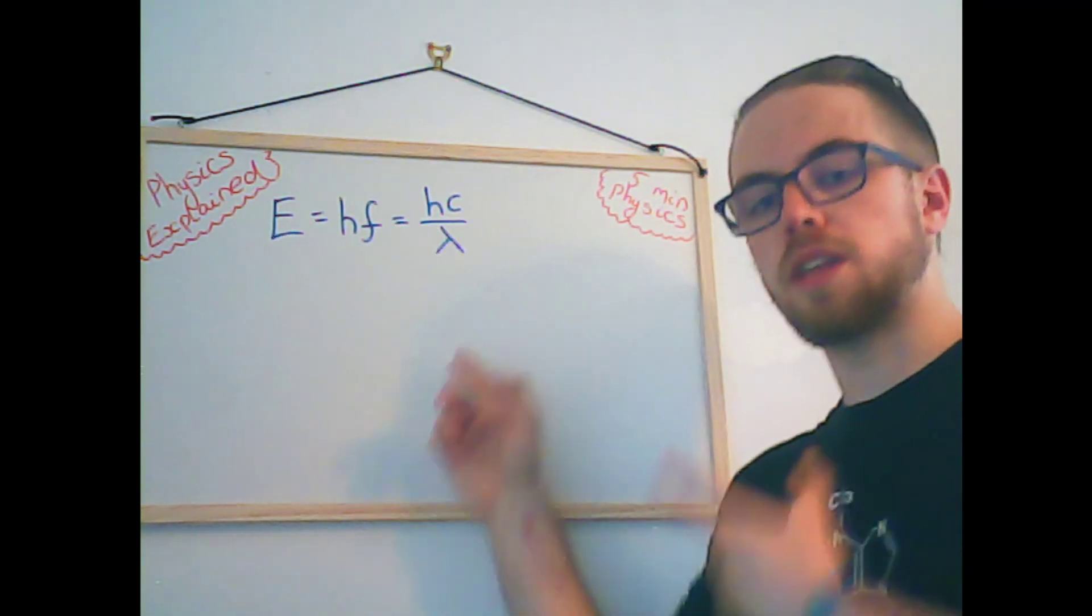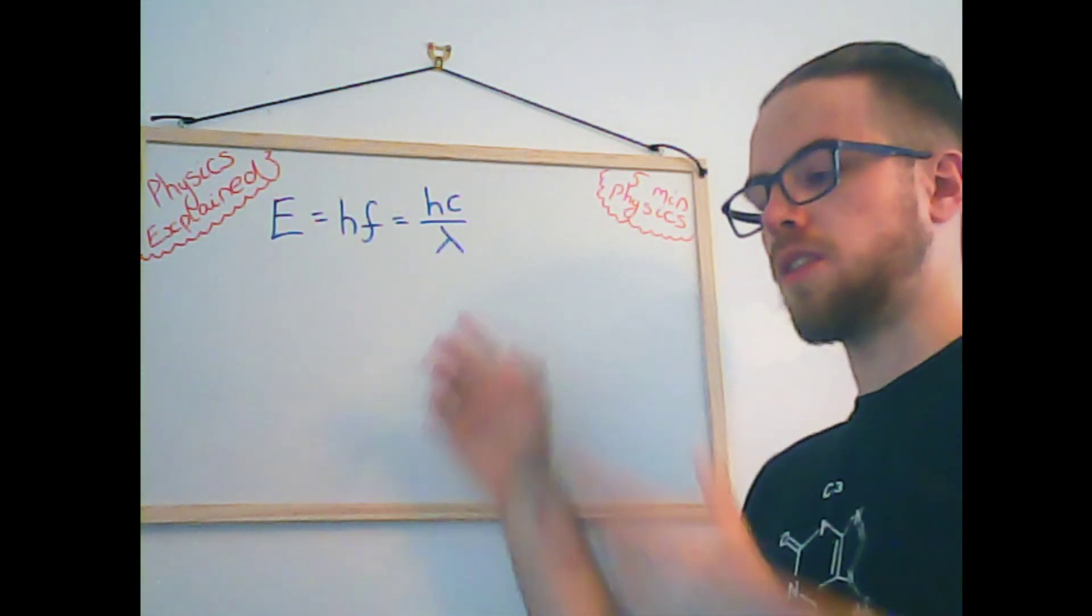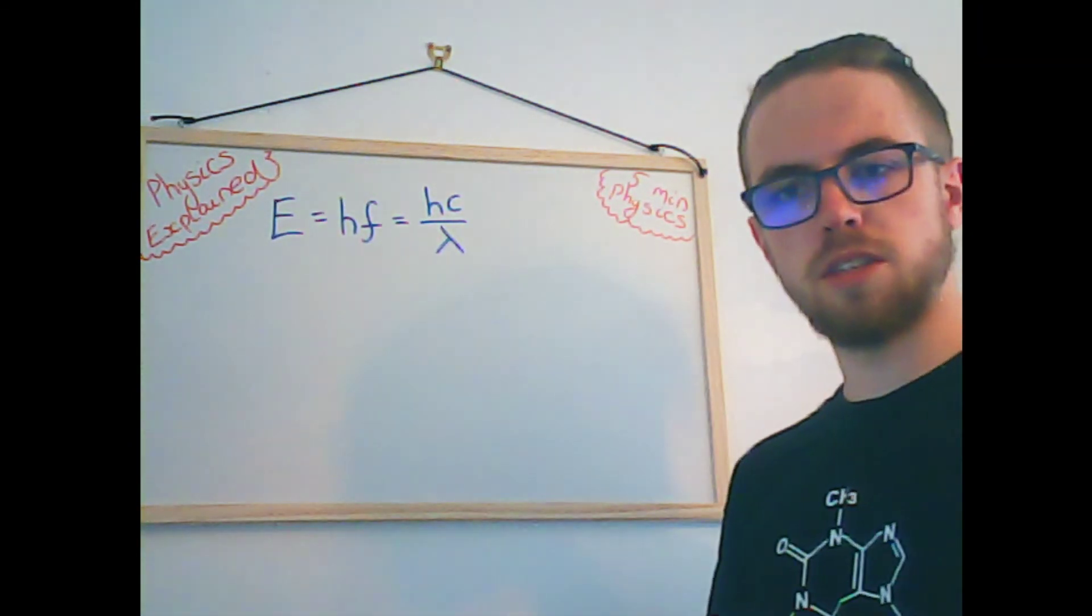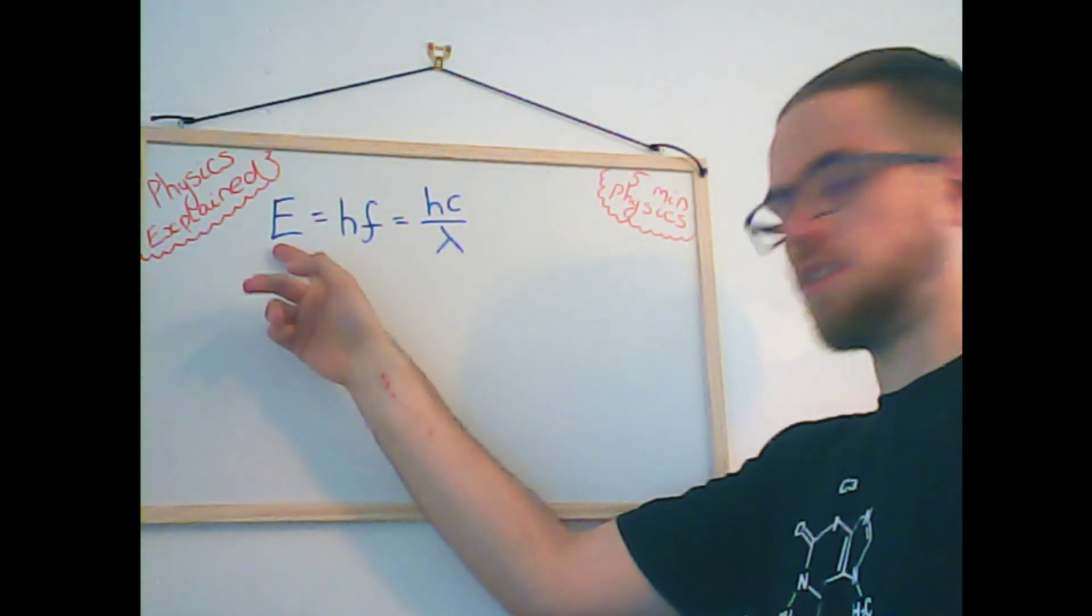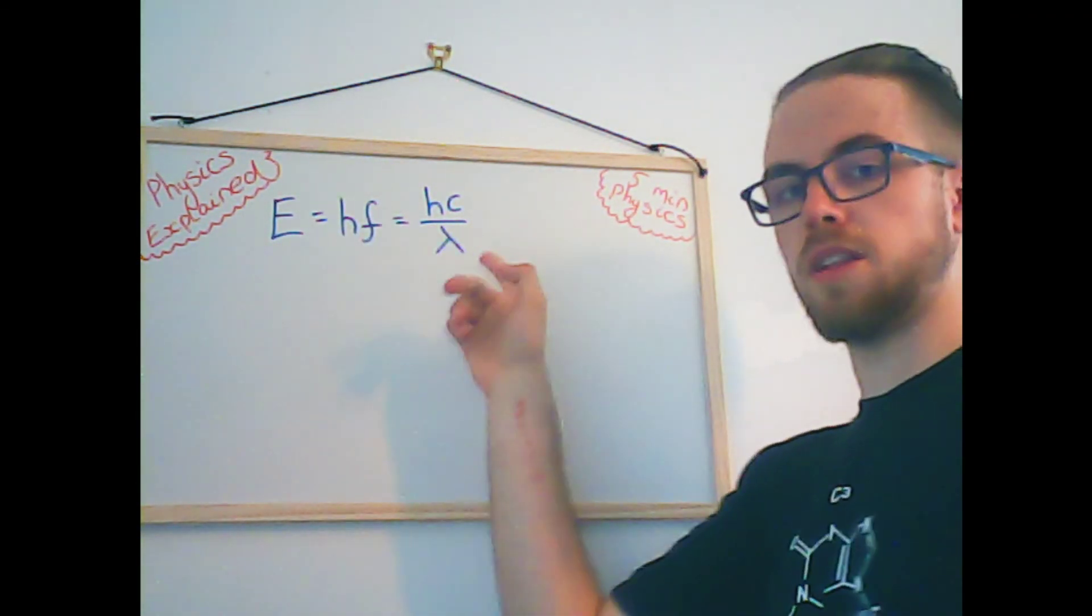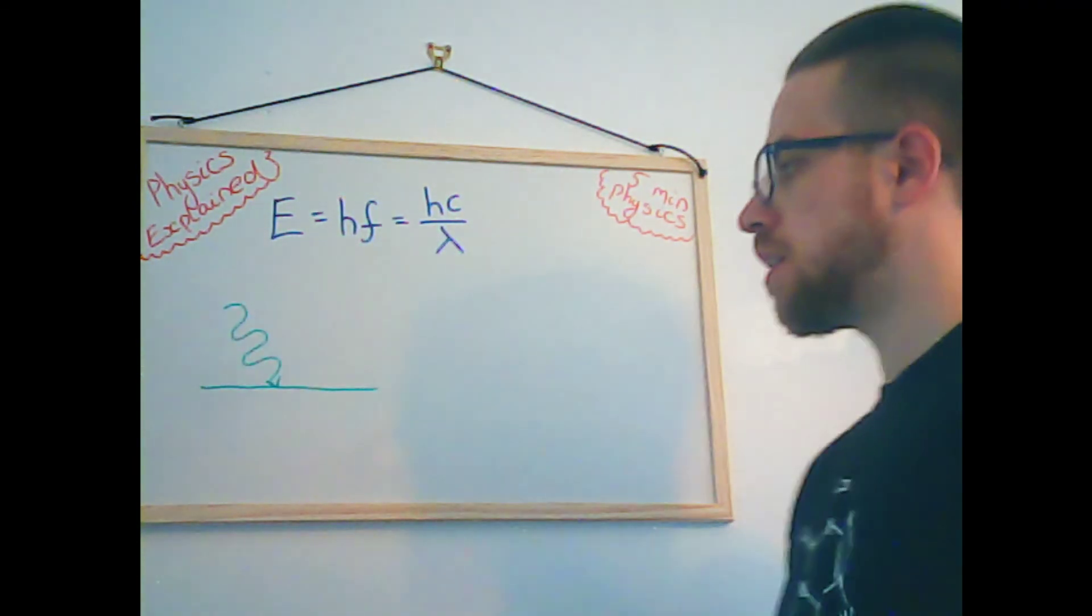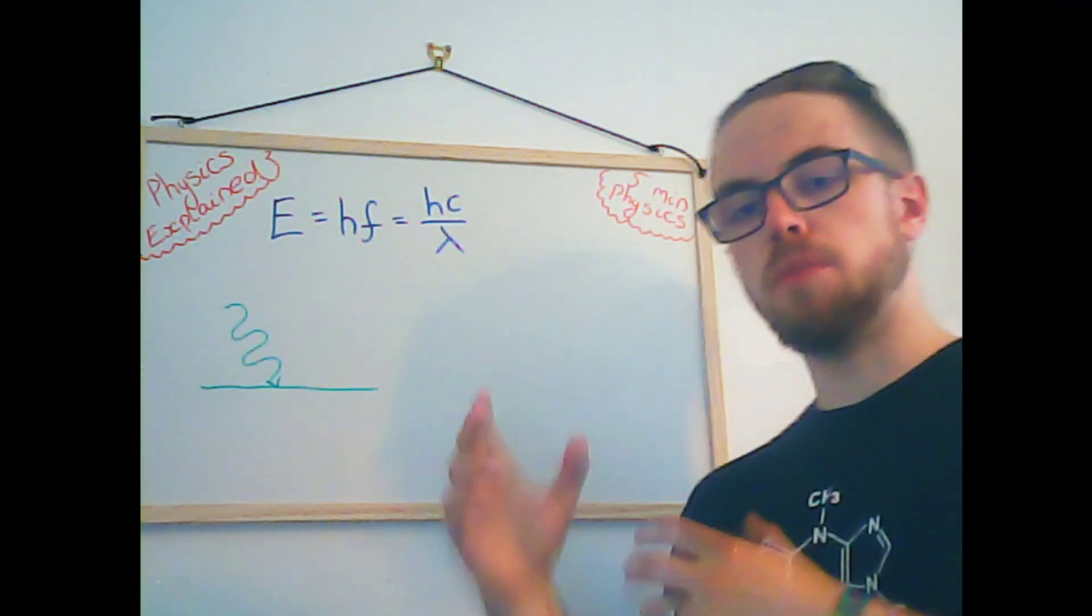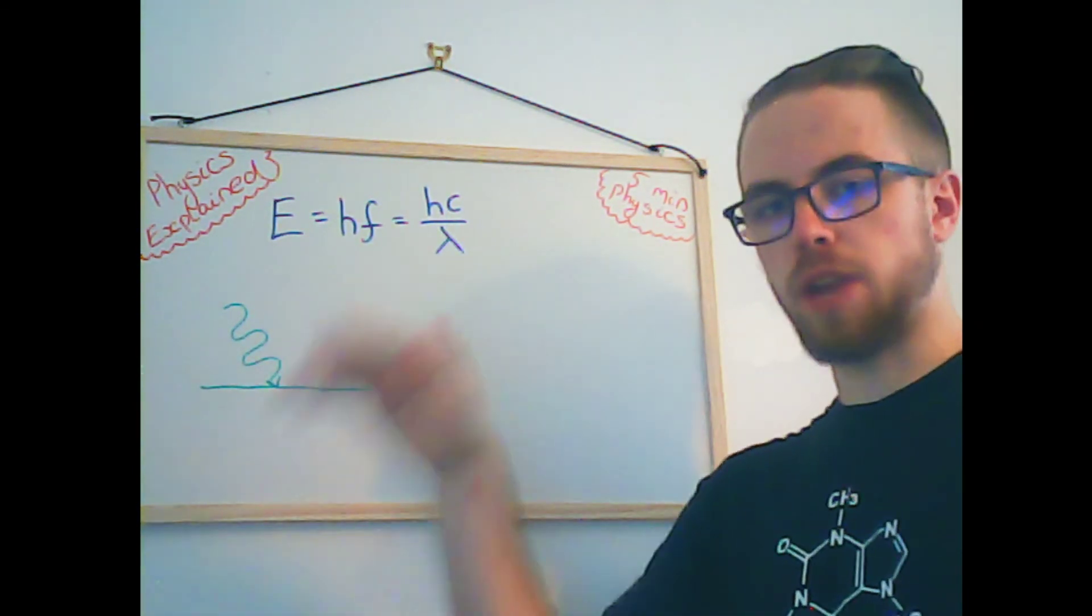But when we were looking at the atom, we were saying that the electron releases some energy. So what we should be saying is that the energy determines the frequency and the wavelength of the photon. Now generally, when we consider the movement of these photons, we consider them moving as a wave.